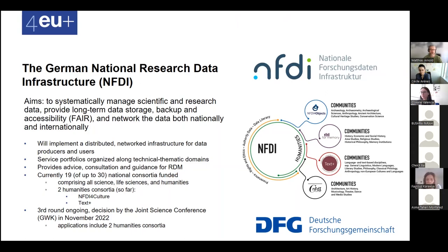The NFDI is still in the making. There have been two rounds of applications — one each year. In the two rounds decided upon so far, 19 consortia have been funded. Two of these focus on the humanities: NFDI4Culture and Text+. Later this year the joint science conference will decide on additional consortia, ideally including NFDI4Memory and NFDI4Objects. NFDI is an infrastructure for research data that includes all kinds of advice, consultation, and guidance on research data management, very much subject or area specific.